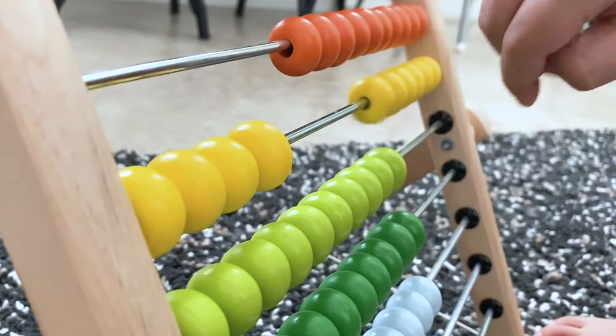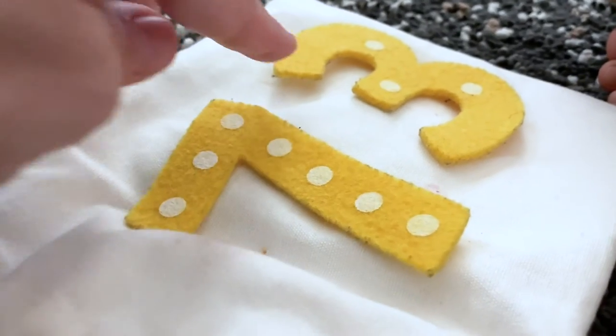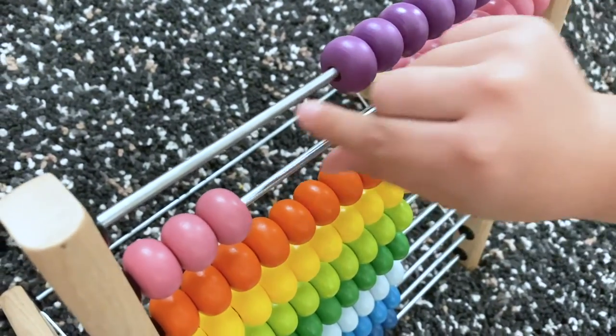This last activity focuses on reading numbers and number sense at the same time and you will need numbers and an abacus. If you don't have an abacus, any counting manipulatives would do.